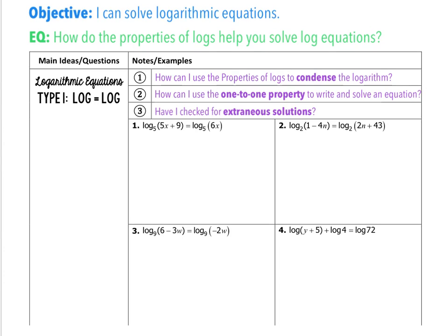So this lesson, our goal is to be able to solve logarithmic equations. As we're working through this, I want you to think about how do the properties of logs help you solve those logarithmic equations. We're going to look at two different types of equations: examples where a log equals a log, and examples where a log equals a number. Our guiding questions are: how can I use the properties of logs to condense the logarithm? How can I use the one-to-one property to write and solve an equation? And always, have I checked for an extraneous solution?